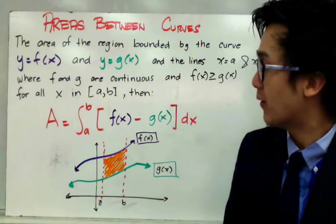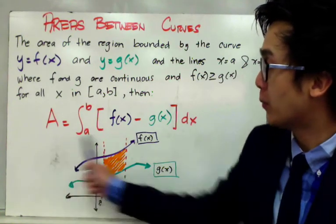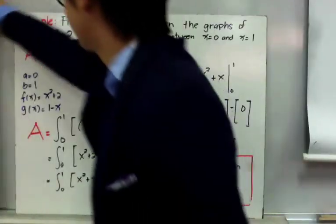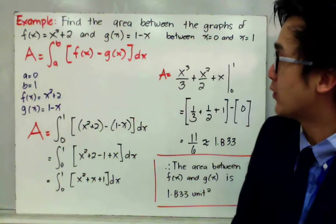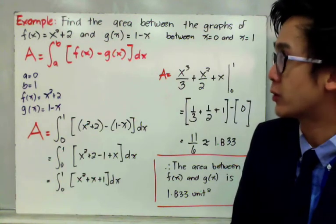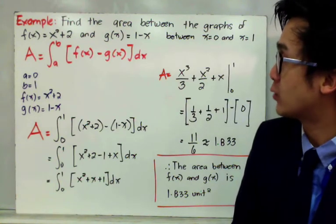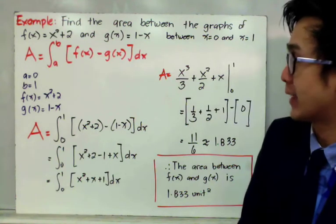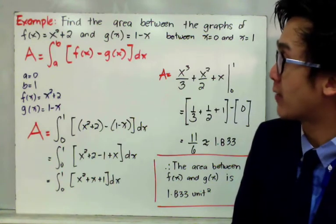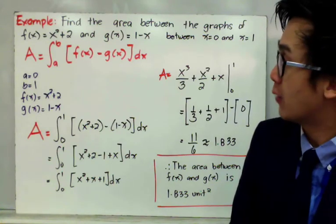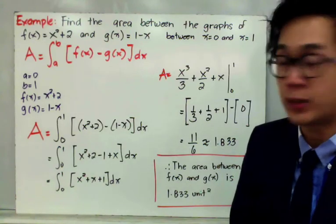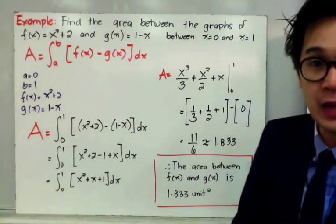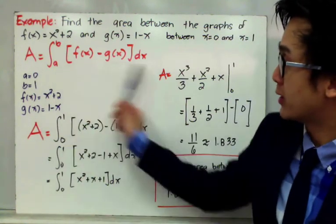Let's have an example of two functions and find out how we use the formula in finding the area of the two functions. The formula that we will use is the one presented on the previous slide. The first step is to organize the numerical values that we will need to use in the formula.